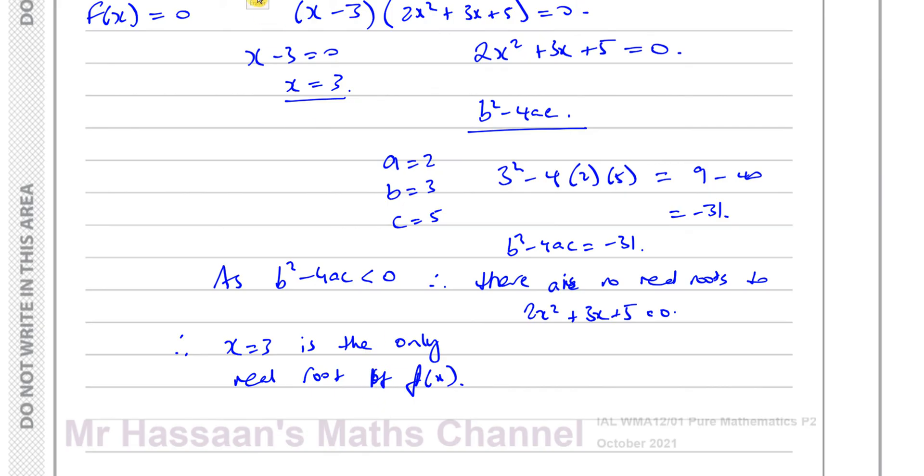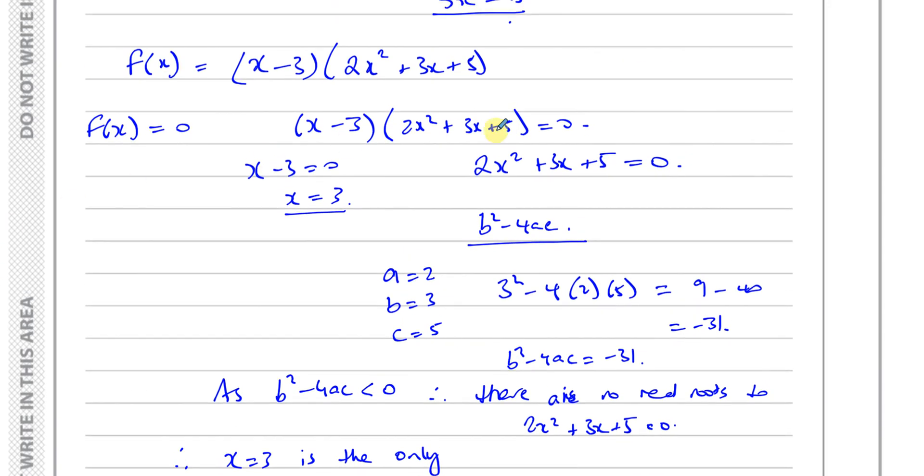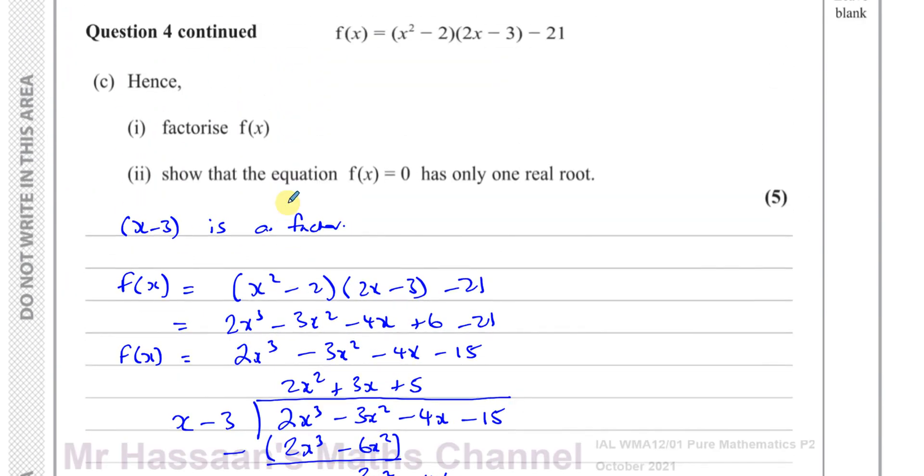Therefore x equals 3 is the only real root of f(x). You should state something here to show that the discriminant is negative. Therefore there's no real roots to this part, this factor of the expression. The only part that has a root is where x minus 3. That factor part gives you the root x equals 3. The other factor gives you no real roots because the discriminant is negative. That's the answer to question C.